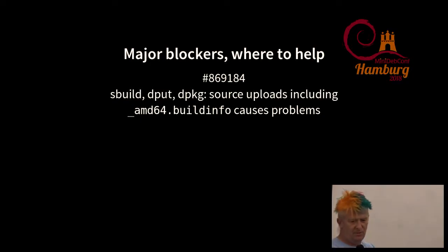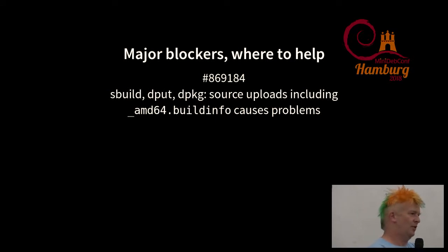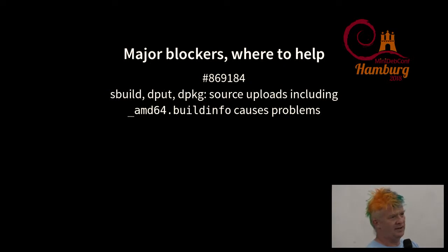One major blocker — and it's unclear whether it's an sbuild, dpkg, or dput issue — is that when you do a source-only upload, an AMD64 .buildinfo changes file is produced because you built on AMD64. That gets uploaded to the archive, DAK sees it, then the binary build happens and another AMD64 .buildinfo file is created, and DAK rejects it. There are several ways to solve this: dput could not upload these files, or dpkg could rename them differently. There needs to be consensus on the bug first, and then the fix should be fairly straightforward.